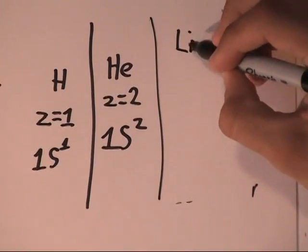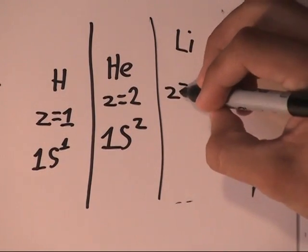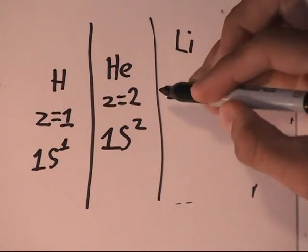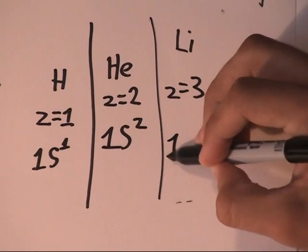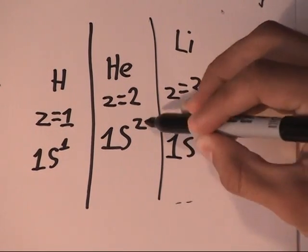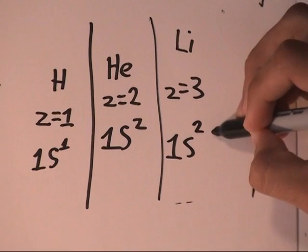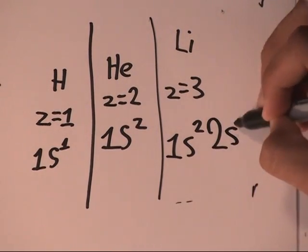This one is lithium, Li. Its atomic number is number three. And its electron configuration is going to be 1s2, because you can have two electrons. And the second orbital is going to be 2s1.